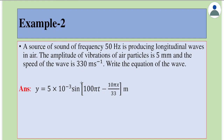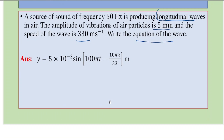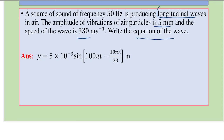Example 2: A source of sound of frequency 50 Hz is producing longitudinal waves in air. The amplitude of vibrations of air particles is 5 millimeters and the speed of wave is 330 meters per second. Write the equation of the wave. Let's write down the parameters given: frequency f = 50 Hz.